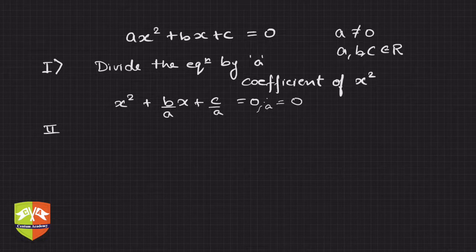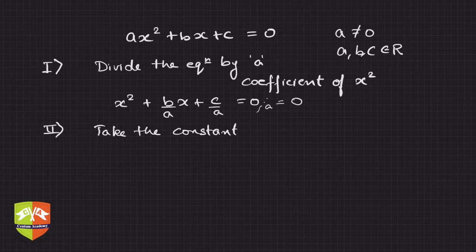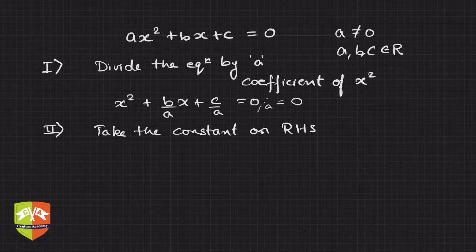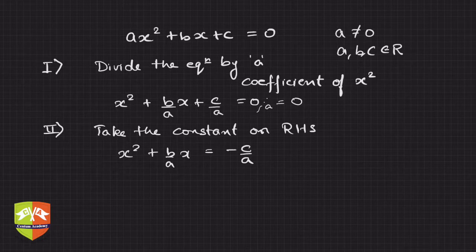Step two: take the constant term to the right-hand side. So you get x² + (b/a)x = -c/a.